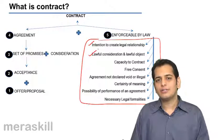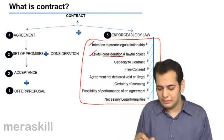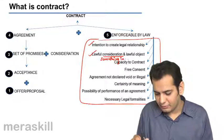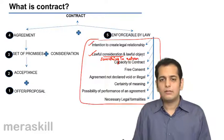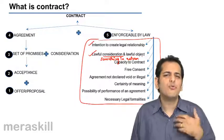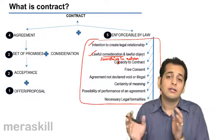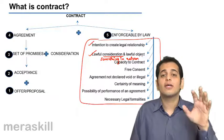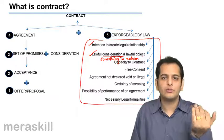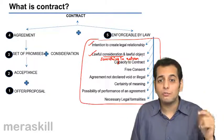The next is lawful consideration and lawful object. Consideration is something in return. When you do anything for the other person, you get something in return. In business, whenever you do something for the other person, you get something in return. But please bear in mind, whatever you get in return has to be lawful.